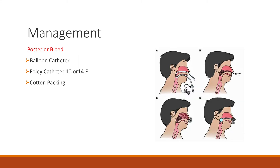For posterior bleeds, you want to use either a balloon catheter, a Foley catheter — either 10 or 14 French — or cotton packing, though cotton packing is generally not used anymore. The method involves threading the catheter through the nose, attaching gauze to it, and pulling it back so it sits against the posterior pharynx, then securing gauze at the entrance of the nares to prevent it from falling out. These patients will typically also have anterior packing placed to cover both bleeding sites.